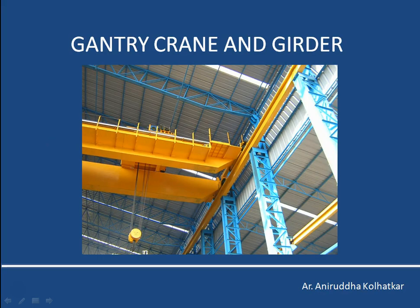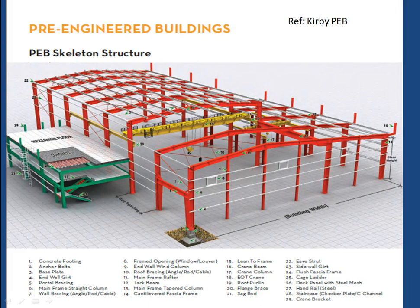Let us first start by understanding what is a gantry crane. If you look at any industrial building — we are seeing a three-dimensional view here — the industrial building consists of a large shed with a long span. Within this industrial shed there are many machines operating in an assembly line. There are raw products brought from outside and finished goods that have to be taken from one point to another. Sometimes these heavy machines also have to be lifted during installation or maintenance work.